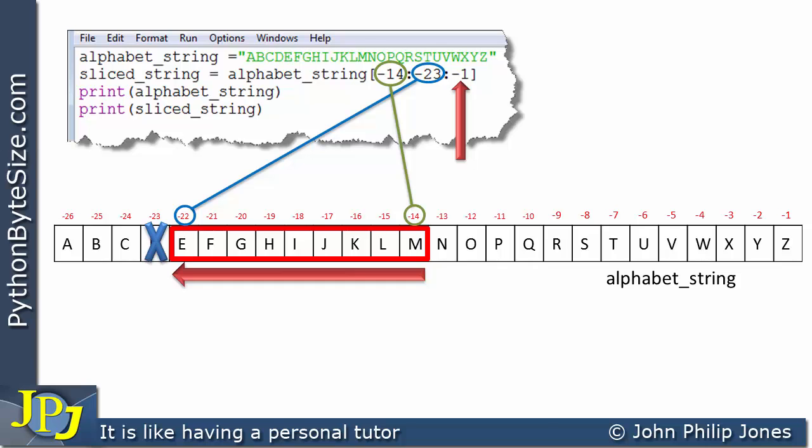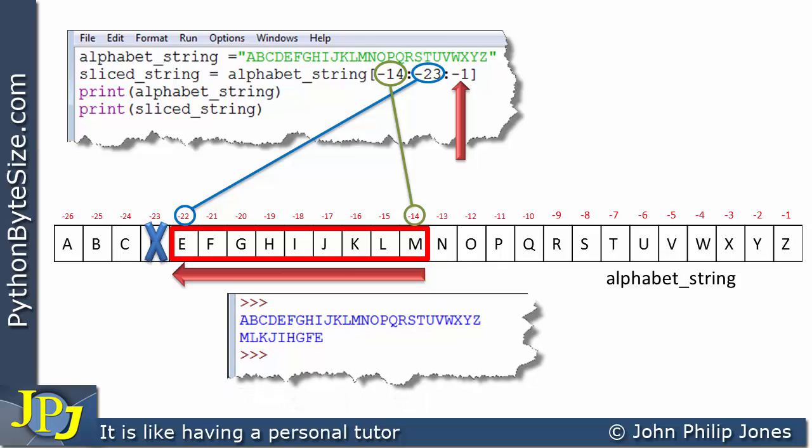Consequently, when we look at the program output, this is what we get. And if you look here, you can see that's the slice that's been taken and it matches what was shown in the schematic diagram. But of course, we have to realize that we have the M, the L, the K all the way up to the E. It's effectively been reversed.